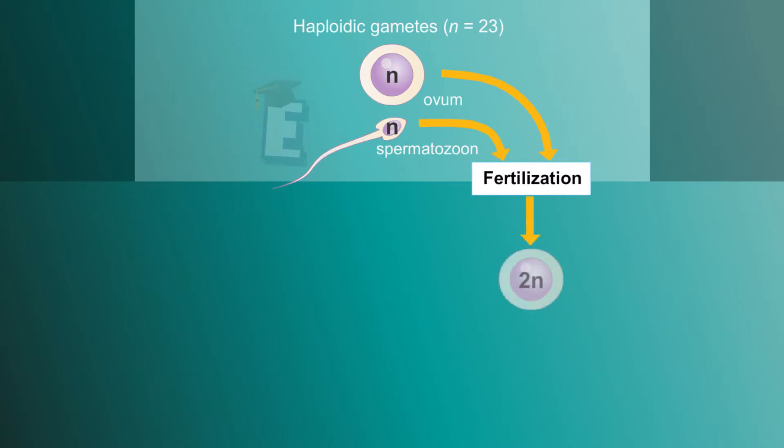The union of two gametes produces zygote, which is the first phase of diploid stage. In this diploid stage, the number of chromosomes have doubled to 46 chromosomes, arranged in 23 pairs.